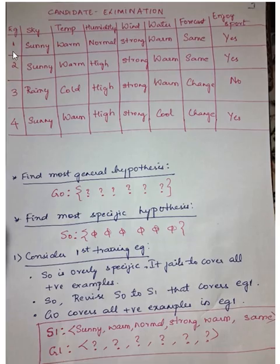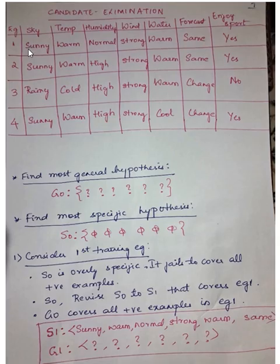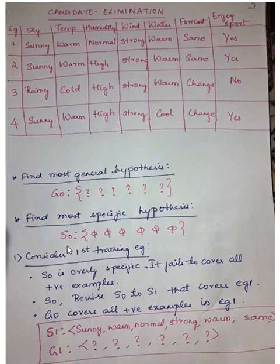Now let's consider the first training example, EG1. We are going to iterate through each example and find out the specific and generic hypothesis. The specific hypothesis S0 is overly specific — it fails to cover any values of this positive instance, since the first example's final label is yes. S0 is not able to cover any of the values of example 1, so we need to revise S0 to S1 such that it will cover example 1.